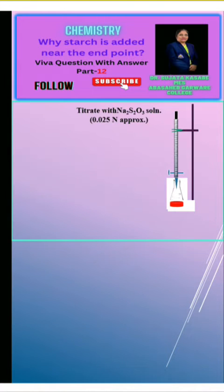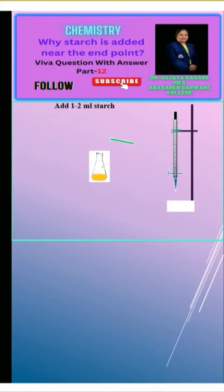In such type of titration, we directly titrate the solution with thiosulfate solution till faint or pale yellow color appear. And now, in this solution, we add 1-2 ml starch indicator.